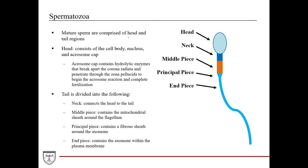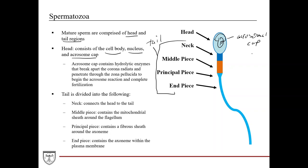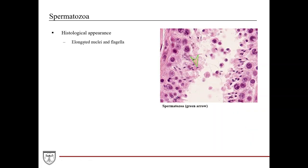Mature sperm are comprised of a head and a tail region. The head consists of the cell body, the nucleus, and the acrosomal cap. The acrosomal cap contains hydrolytic enzymes that break apart the corona radiata and help penetrate the zona pellucida to complete fertilization. The tail is divided into the neck region, which connects the head to the tail; the middle piece, which contains the mitochondrial sheath around the flagellum; the principal piece, which contains a fibrous sheath around the axoneme; and the end piece, which contains the axoneme within the plasma membrane. Histologically, spermatozoa show elongated nuclei and a flagella.